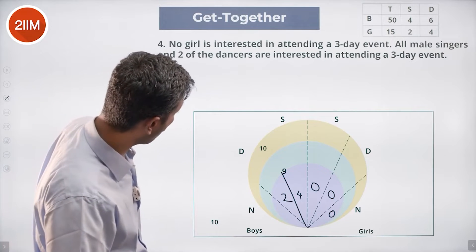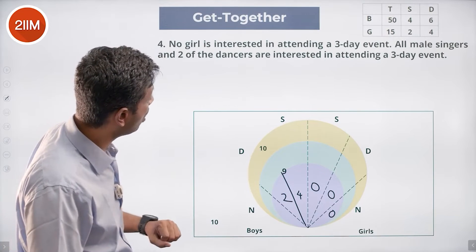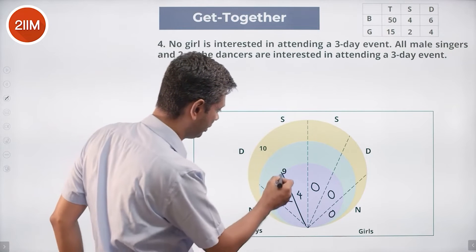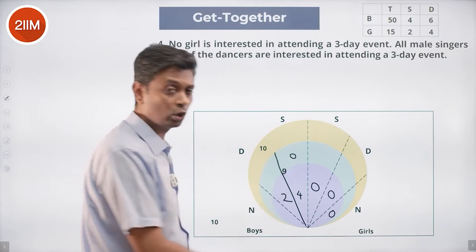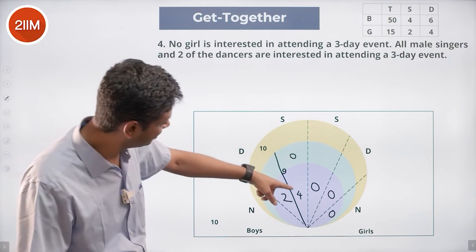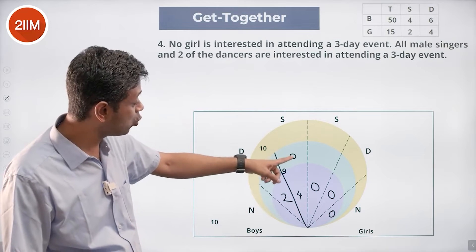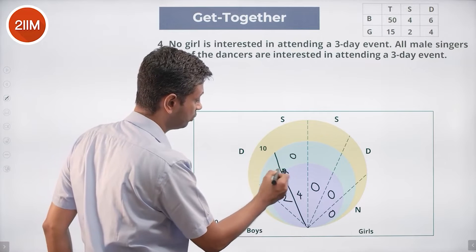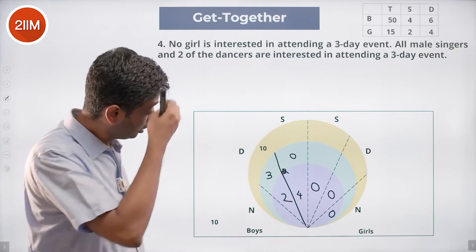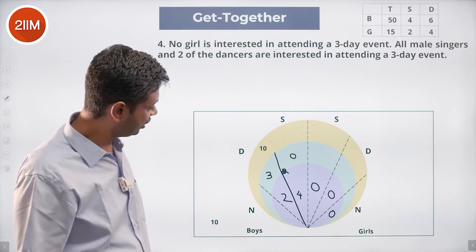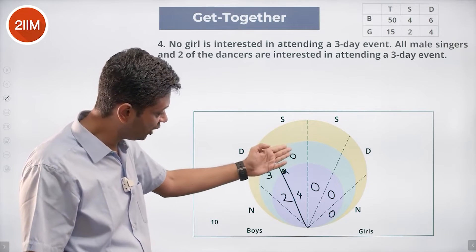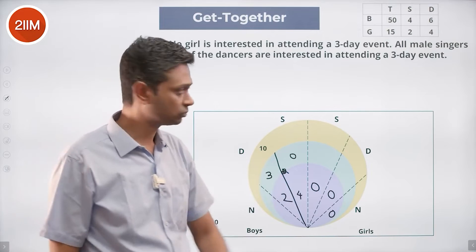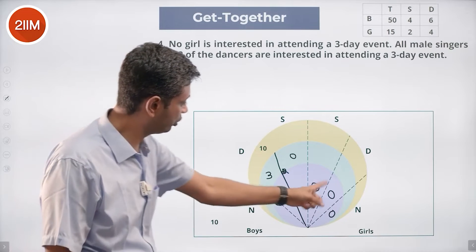The overall boys' singers-and-dancers in the two-day region is 9. All four male singers are in the three-day event. So in the two-day-but-not-three-day region, male singers should be zero. That accounts for four singers and two dancers in the three-day event, totaling 6. Subtracting from 9 leaves 3 for the two-day-only region. Male singers in two-day-only: zero. Two dancers only in two-day-only: zero.